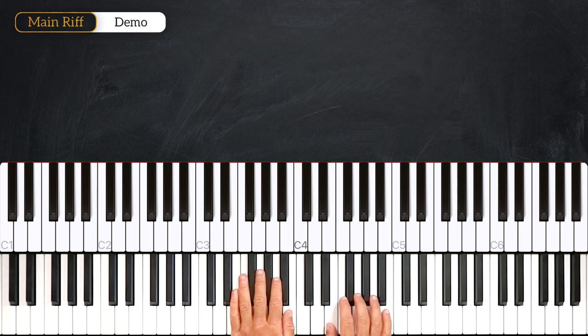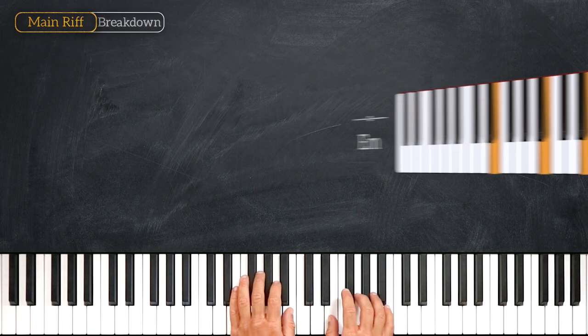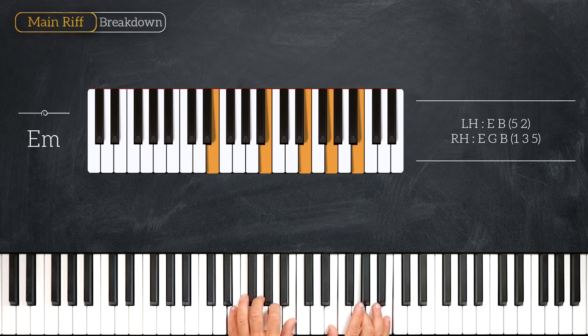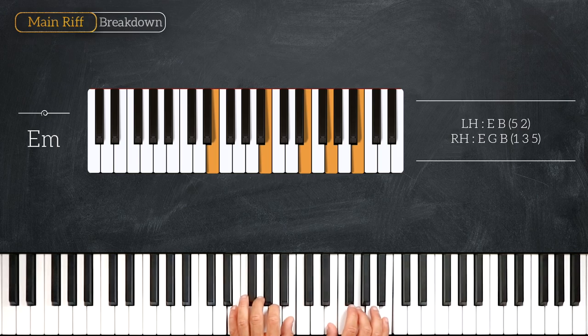Here are the chords. So we start on the first degree, playing this E minor chord. E, B on the left and E, G, B on the right. E minor.